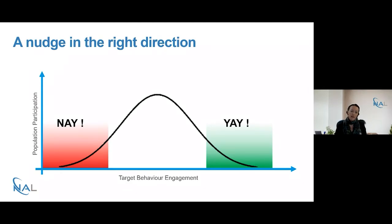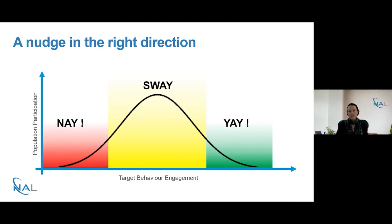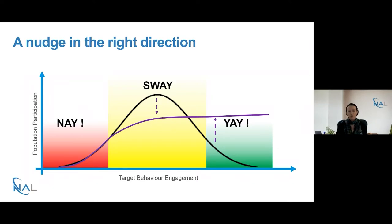The group that BI teams are usually interested in is the group in the centre. This group aren't necessarily averse to participating in the behaviour, but maybe they just haven't had sufficient support or opportunity yet to engage. BI actually wants to flatten this curve — to help those in this middle group who aren't participating but want to, to move to fuller engagement with the target behaviour.